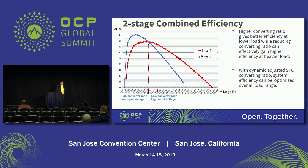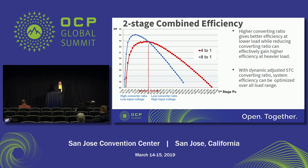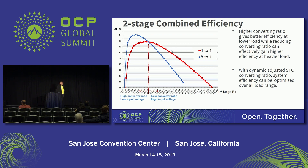As a result, if we combine two-stage efficiency, at light load, if we switch to 8-to-1 conversion ratio, we can have better two-stage efficiency. And at heavy load, operating at 4-to-1 conversion ratio gives us better efficiency. So we get an efficiency envelope — just like auto-phasing in VR multi-phase — and we can adjust and optimize the two-stage combined efficiency by changing the conversion ratio on the fly.